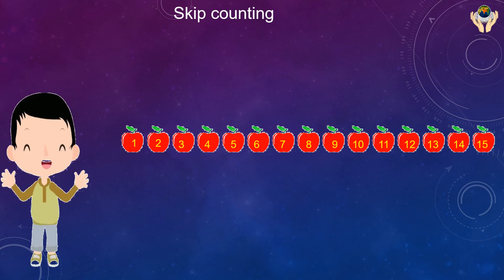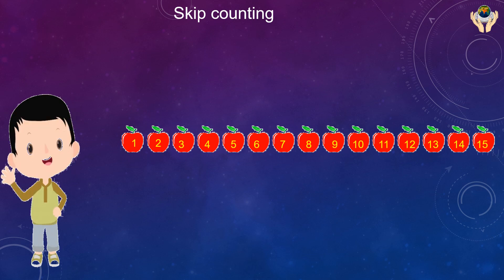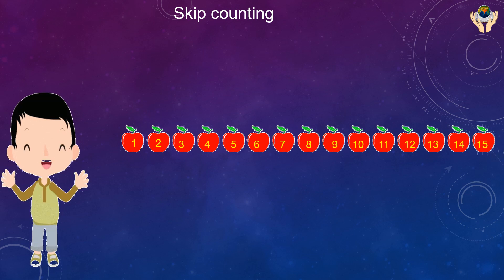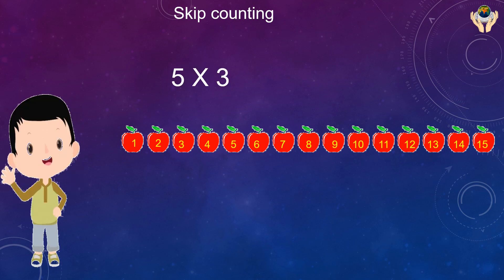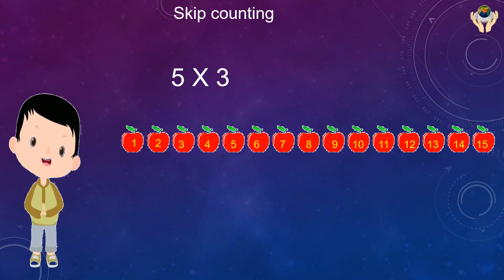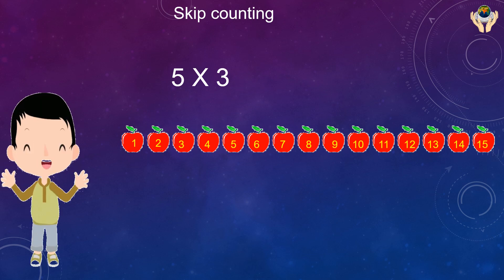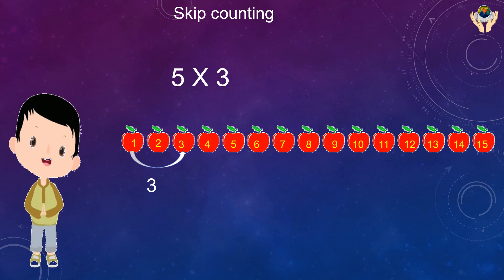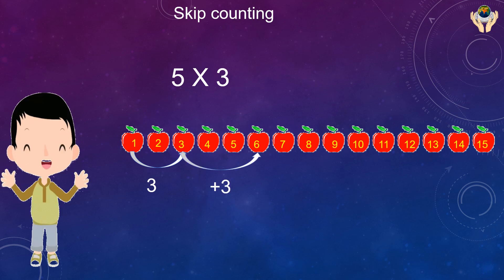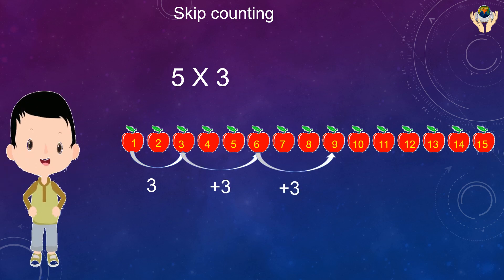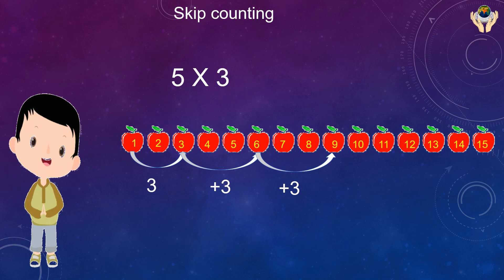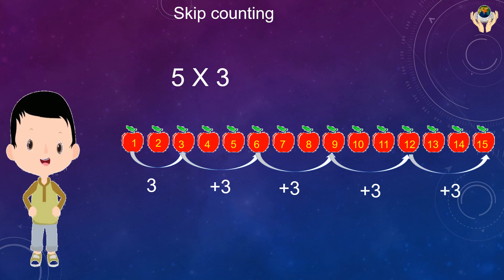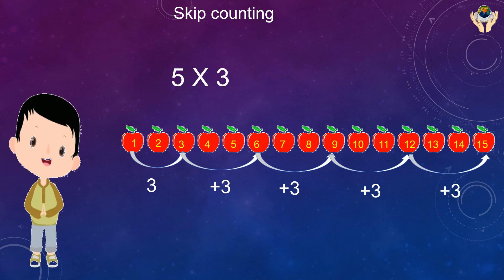Skip counting — we skip the number by counting. Five multiplied by three: we count forward by fives, three times. First time: 1, 2, 3, 4, 5. Second time: 6, 7, 8, 9, 10. Third time: 11, 12, 13, 14, 15. The answer is 15.